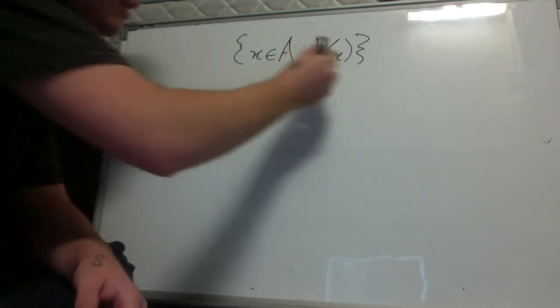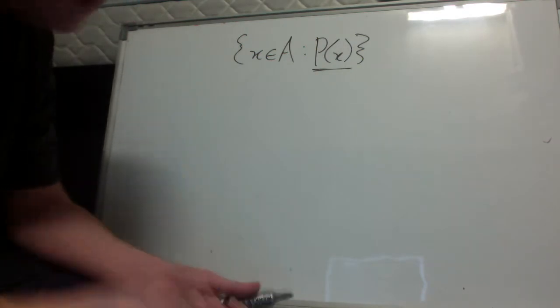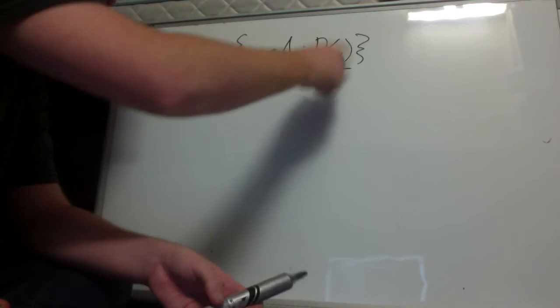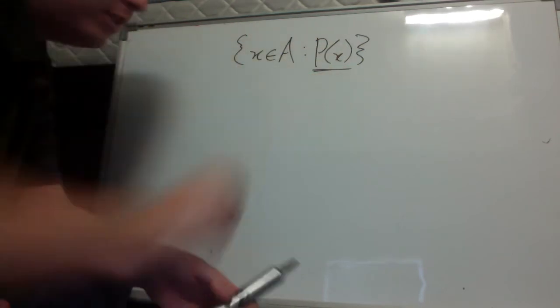Here p of x is essentially some predicate, so it's a condition that x must satisfy in order to be an element of this set.